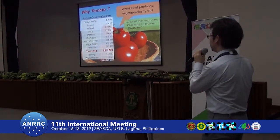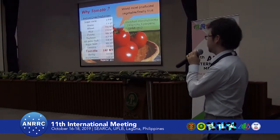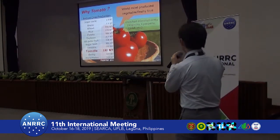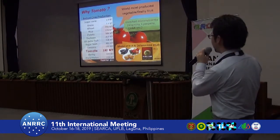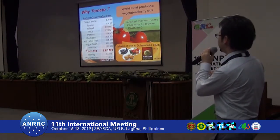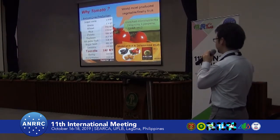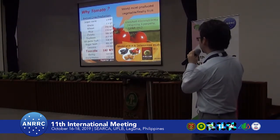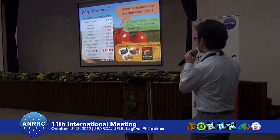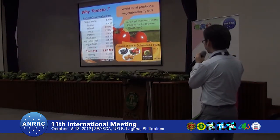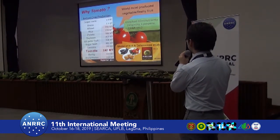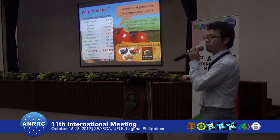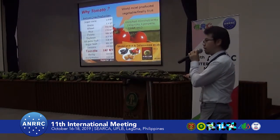GABA is also recognized as a beneficial molecule that can decrease blood pressure. From this background, tomato is recognized as the model plant of fruit biology and also Solanaceae family, which includes many important crops like eggplant, pepper, tomato, and potato. The genome was sequenced by 2012, and the Japanese institute played a central role in sequencing the tomato genome.